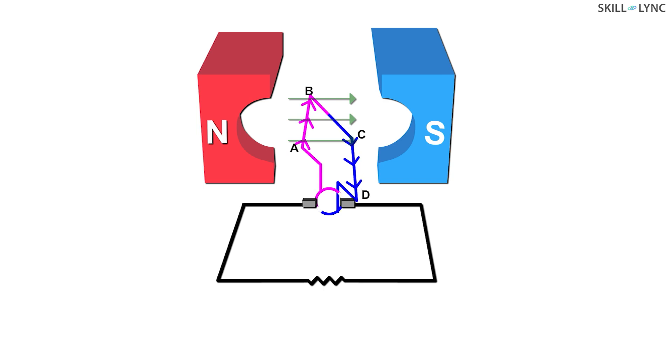As the armature completes half rotation, the side AB will now move in the downward direction and CD in the upward direction. Applying Fleming's rule again, we see that the direction of current is reversed. As the armature rotates, the direction of current reverses for every half rotation. For every half rotation, you will also notice that the commutator switches its contacts with the carbon brushes.